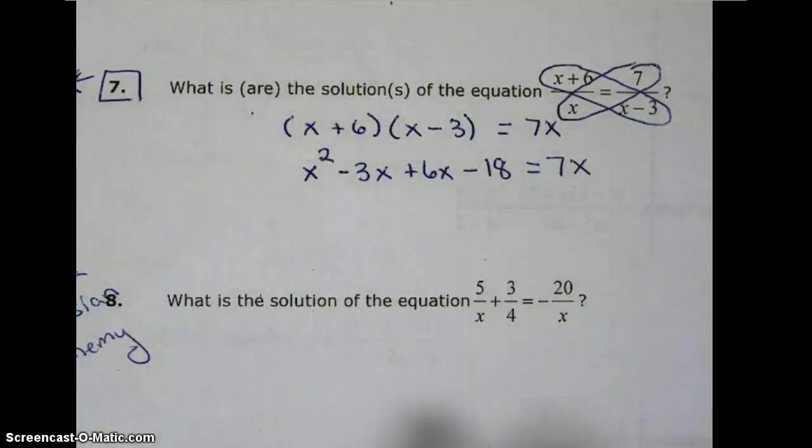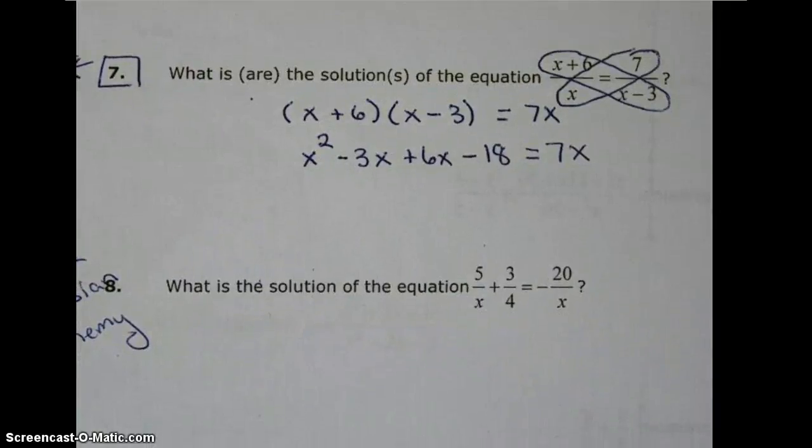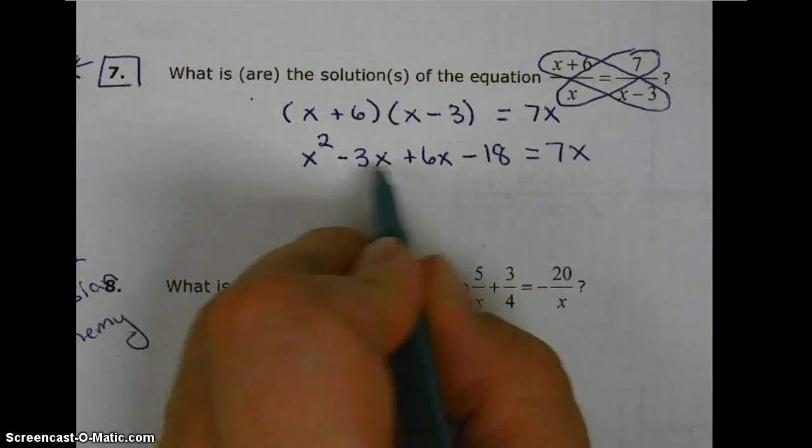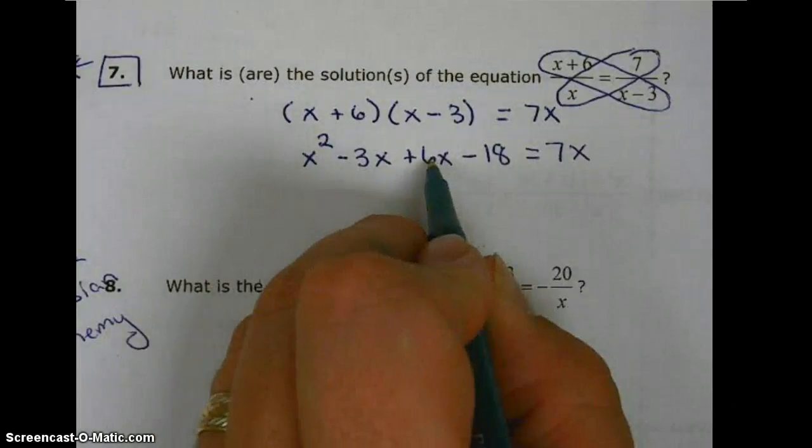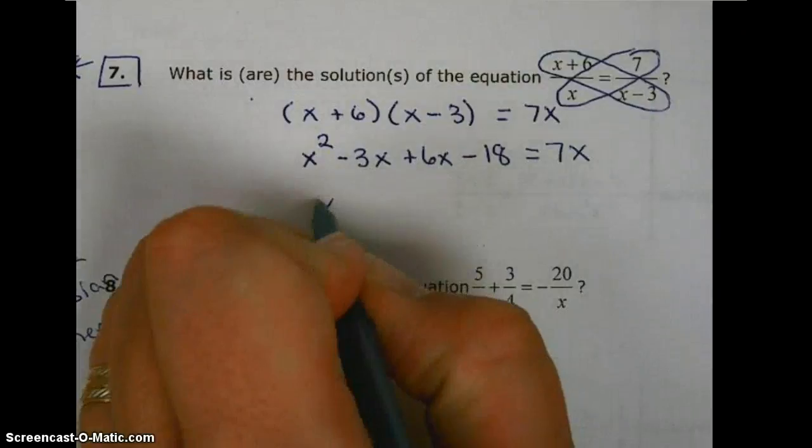Equals 7x. Then we combine like terms: negative 3x and 6x is 3x.